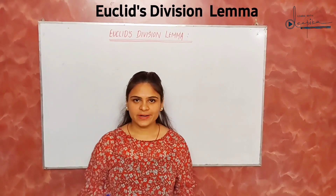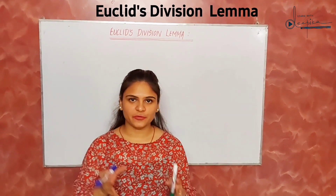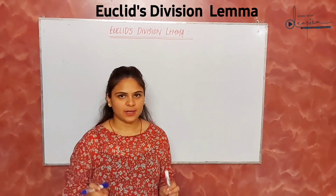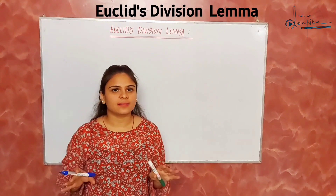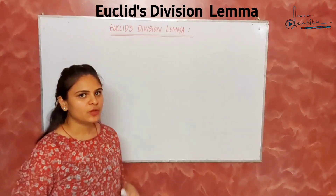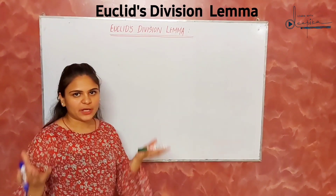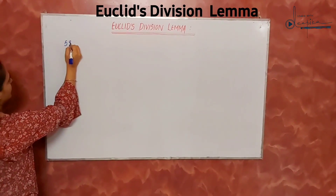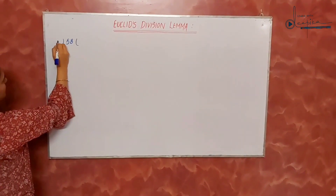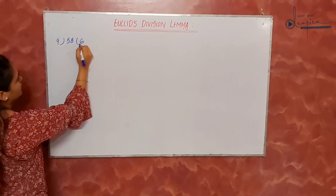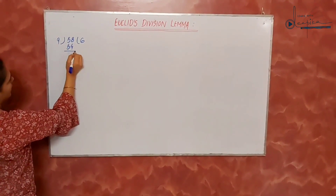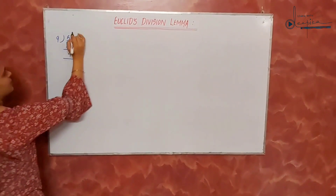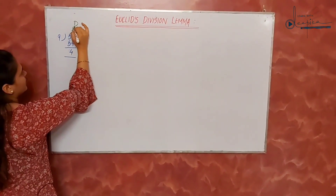Our next topic is Euclid's division lemma. The name is a little bit confusing, but it is very easy as it is based on division. I will explain it with a simple example. If I divide 58 by 9, that gives 9 into 6 equals 54, and the remainder is 4.